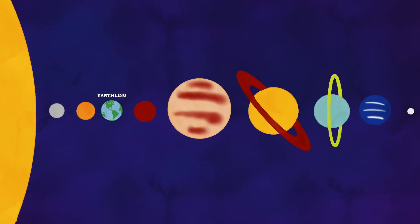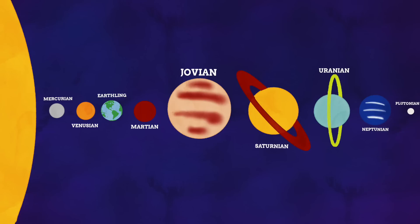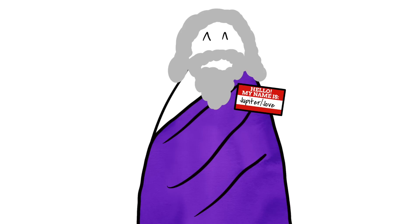Undoubtedly the most well-known of these extraterrestrial demonyms is Martian, which relates to someone from Mars. The other planet demonyms include Mercurian for Mercury, Venusian for Venus, Saturnian for Saturn, Uranian for Uranus, Neptunian for Neptune, and Plutonian for Pluto. You probably noticed I missed out the biggest planet, Jupiter. That's because Jupiter is actually slightly different — it is not Jupiterian, but instead Jovian. This demonym comes from the name Jove, which is an alternative name for the god of Jupiter in Roman mythology, the god this planet was named after and the Roman equivalent of Zeus.